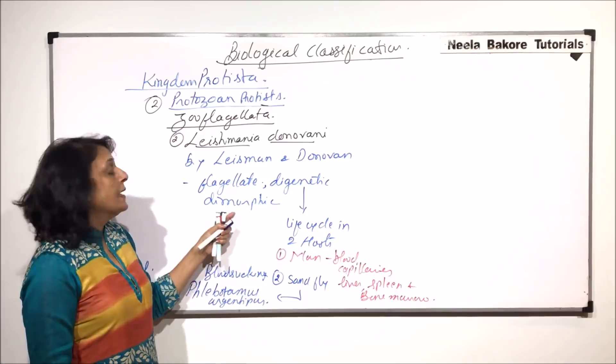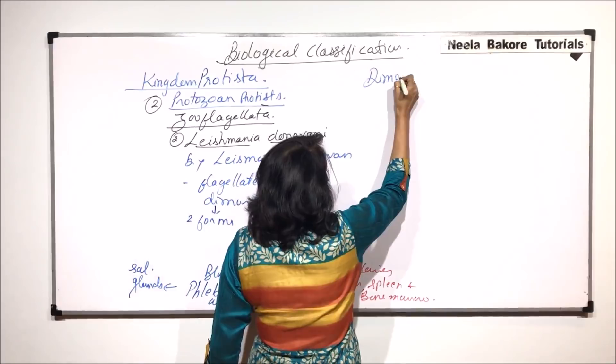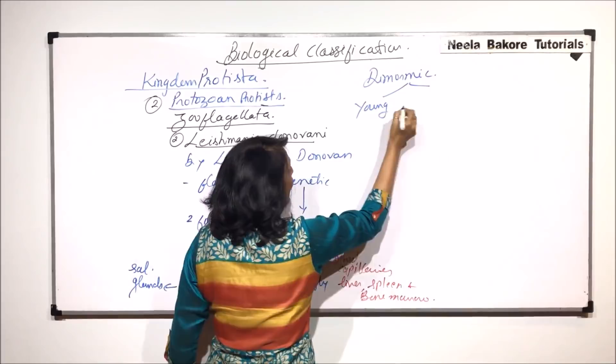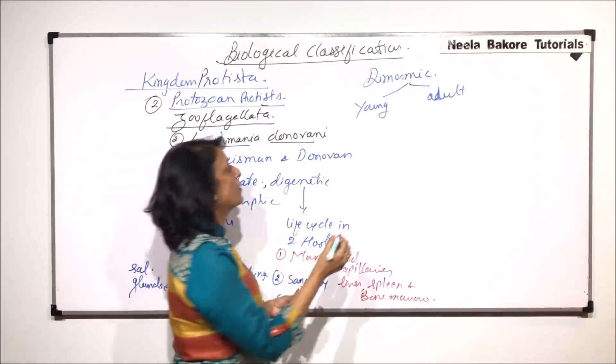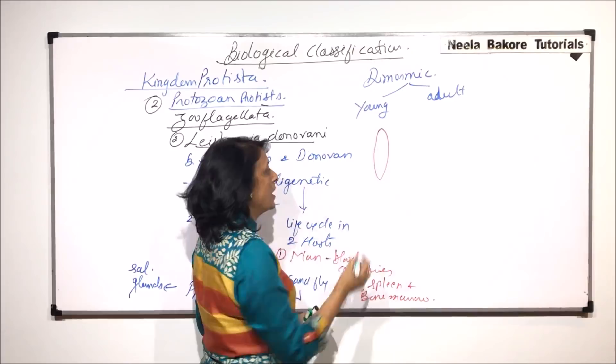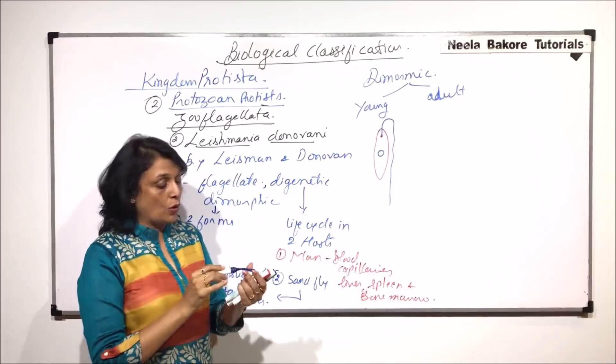Now when we say dimorphic, dimorphic means it exists in two forms. Now what are these two forms? Dimorphic forms: one is called the young and the other is known as the adult. The young state and adult state look totally different from each other. The young one is elongated and slightly spindle-shaped. It has a basal granule from which a large flagellum arises. The nucleus and other structures are also present.